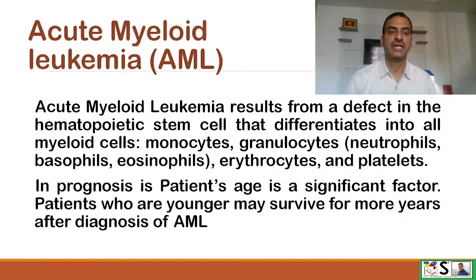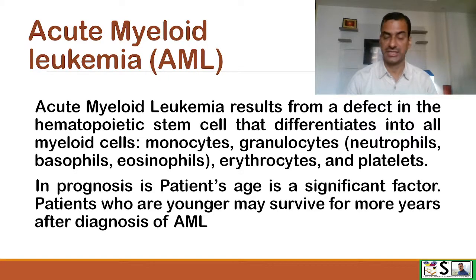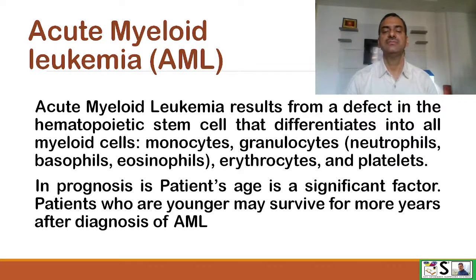First we will discuss AML — acute myeloid leukemia. Acute myeloid leukemia results from a defect in the hematopoietic stem cell that differentiates into all myeloid cells: monocytes, granulocytes (which includes neutrophils, basophils, and eosinophils), erythrocytes, and platelets.